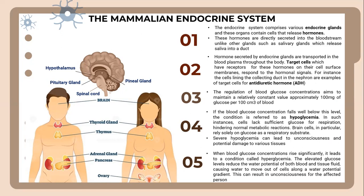The regulation of blood glucose concentration aims to maintain a relatively constant value of approximately 100 mg of glucose per 100 cm³ of blood. If the blood glucose concentration falls well below this level, the condition is referred to as hypoglycemia. In such instances, cells lack sufficient glucose for respiration, hindering normal metabolic reactions. Brain cells in particular rely solely on glucose as a respiratory substrate. Severe hypoglycemia can lead to unconsciousness and potential damage to various tissues.